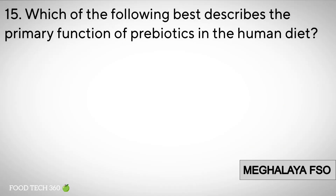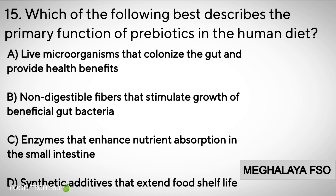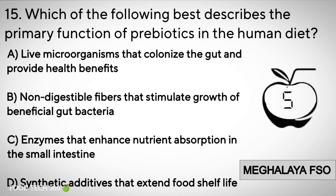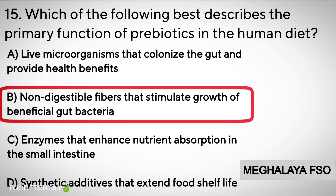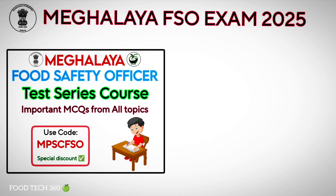Question number fifteen. Which of the following best describes the primary function of prebiotics in the human diet? A. Live microorganisms that colonize the gut and provide health benefits. B. Non-digestible fibers that stimulate growth of beneficial gut bacteria. C. Enzymes that enhance nutrient absorption in the small intestine. D. Synthetic additives that extend food shelf life. Correct answer: B. Non-digestible fibers that stimulate growth of beneficial gut bacteria.